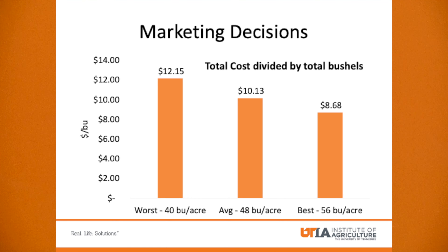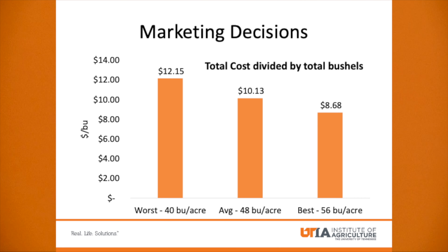The next slide will show some breakeven prices for soybeans. Similarly, I did a worst, average, and best case scenario. These are helpful for sensitivity analysis — you haven't yet harvested, so there are still some unknowns in production. But at this point you may have a good ballpark of the worst case scenario yield you're expecting, what you sort of expect on average, and the best case scenario if everything goes right. Using our sensitivity analysis and dividing our total cost of production by our yields, we can see that in the best case scenario, we need about $8.68 a bushel to break even.